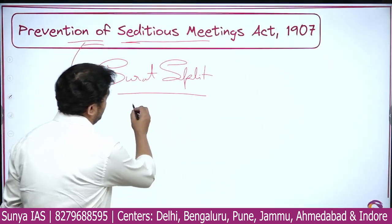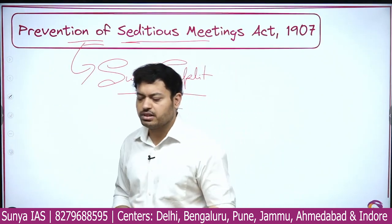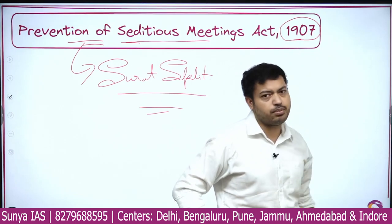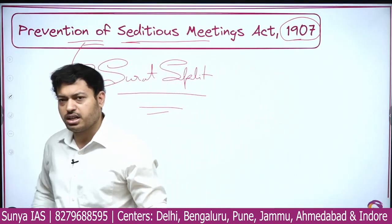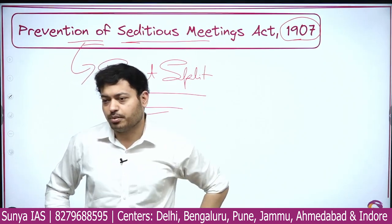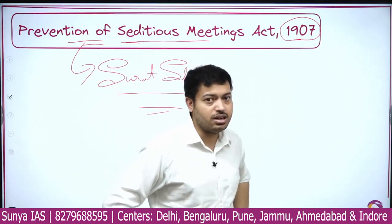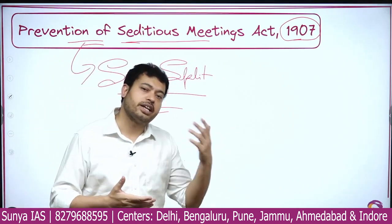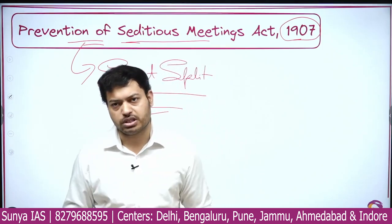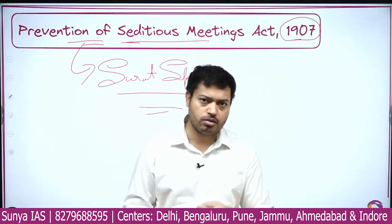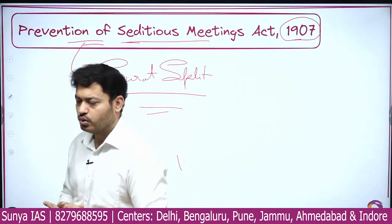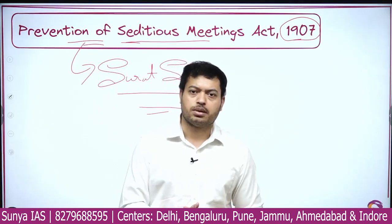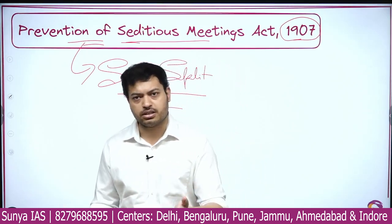This was the last enactment we needed to cover today. The next lecture will start with enactments which happened after 1905. The Prevention of Seditious Meetings Act happened after 1905, but since it is connected to the Surat Split and the Swadeshi and Boycott Movement — which connect to the Bengal Partition — I kept it here. The other enactments up to 1947 will be discussed in the next lecture. A PDF containing all the information from this lecture is available below the video. Check out the link for the crash course and other information, and subscribe. That will be all for now — let's catch up in the next lecture. Thank you and have a nice day.